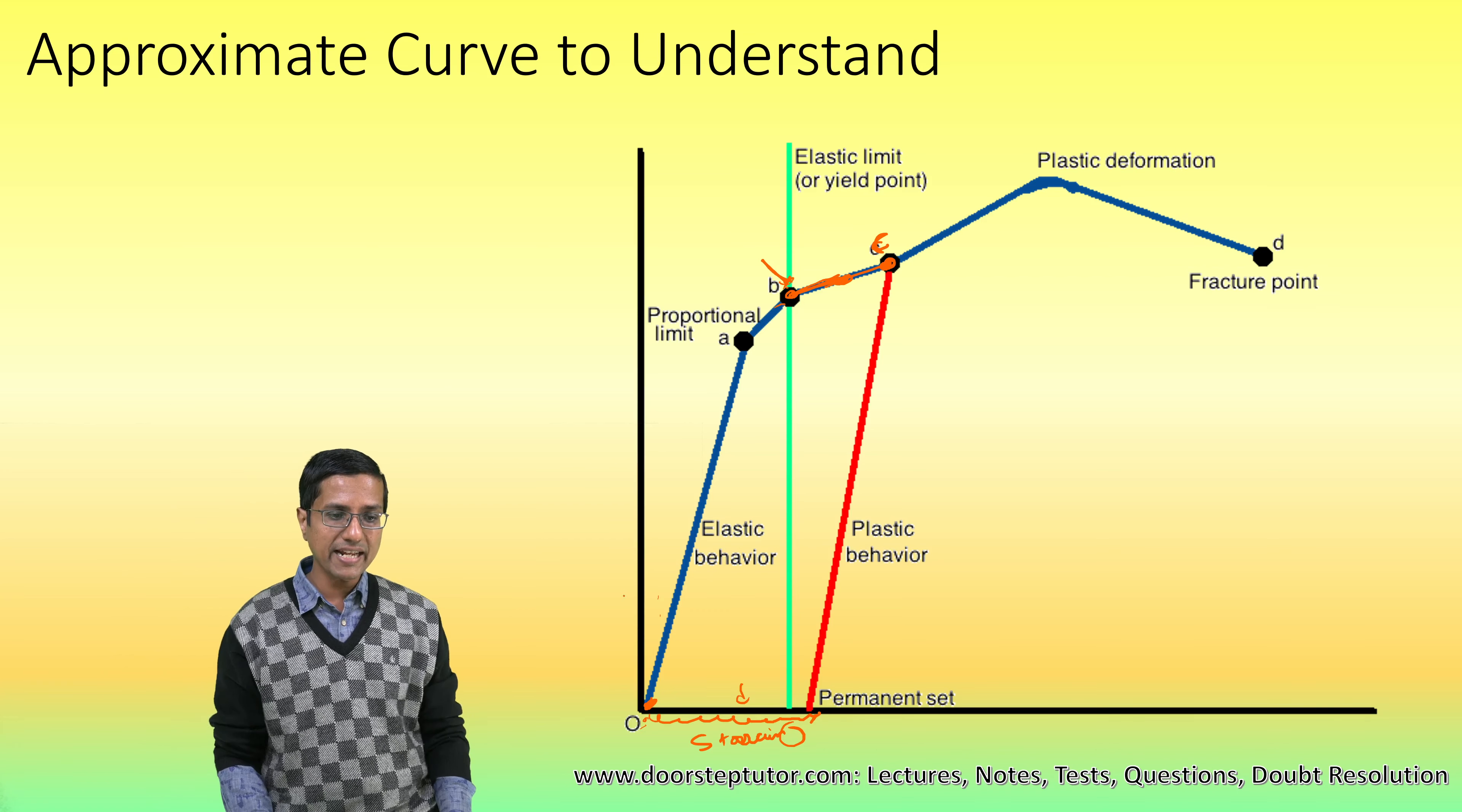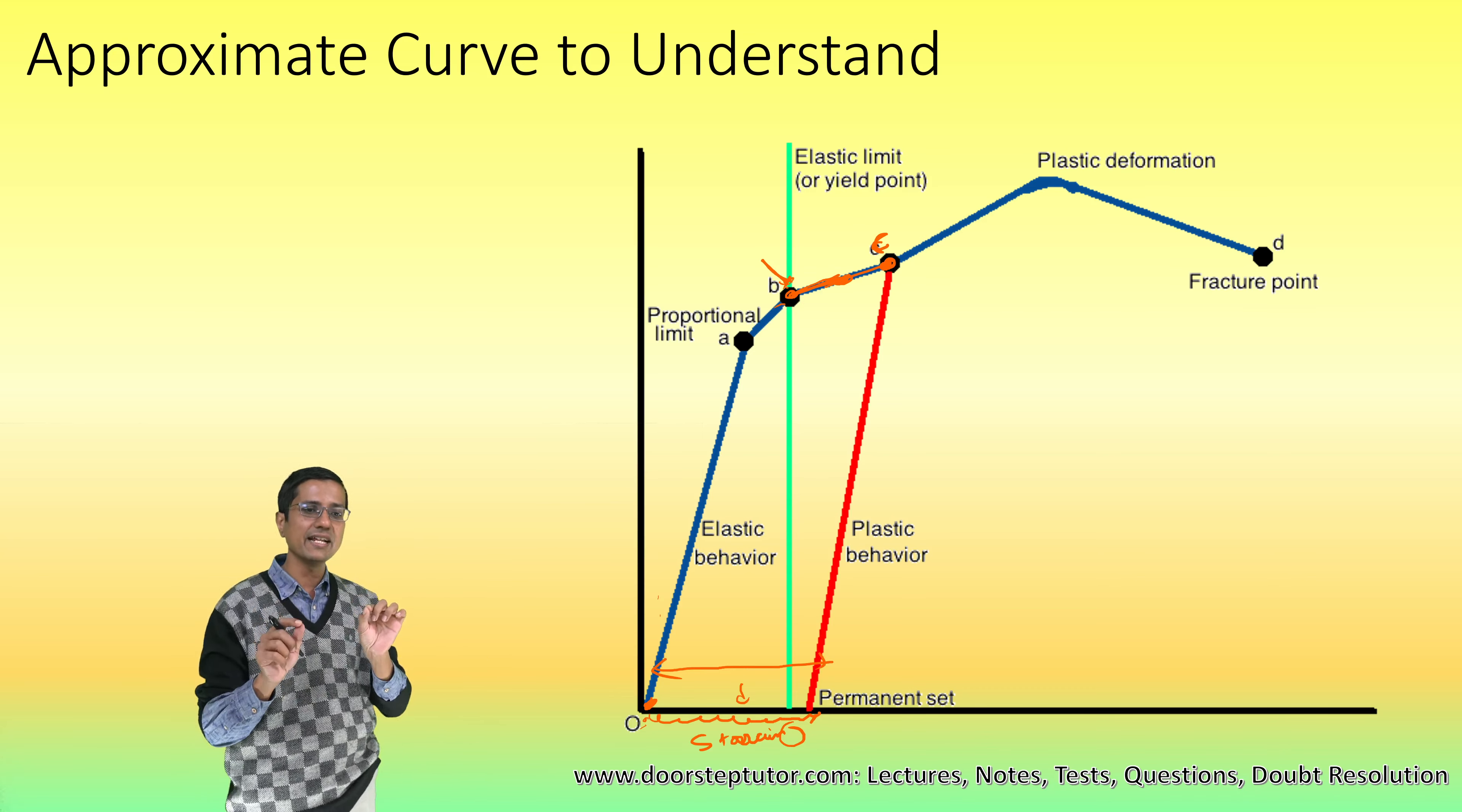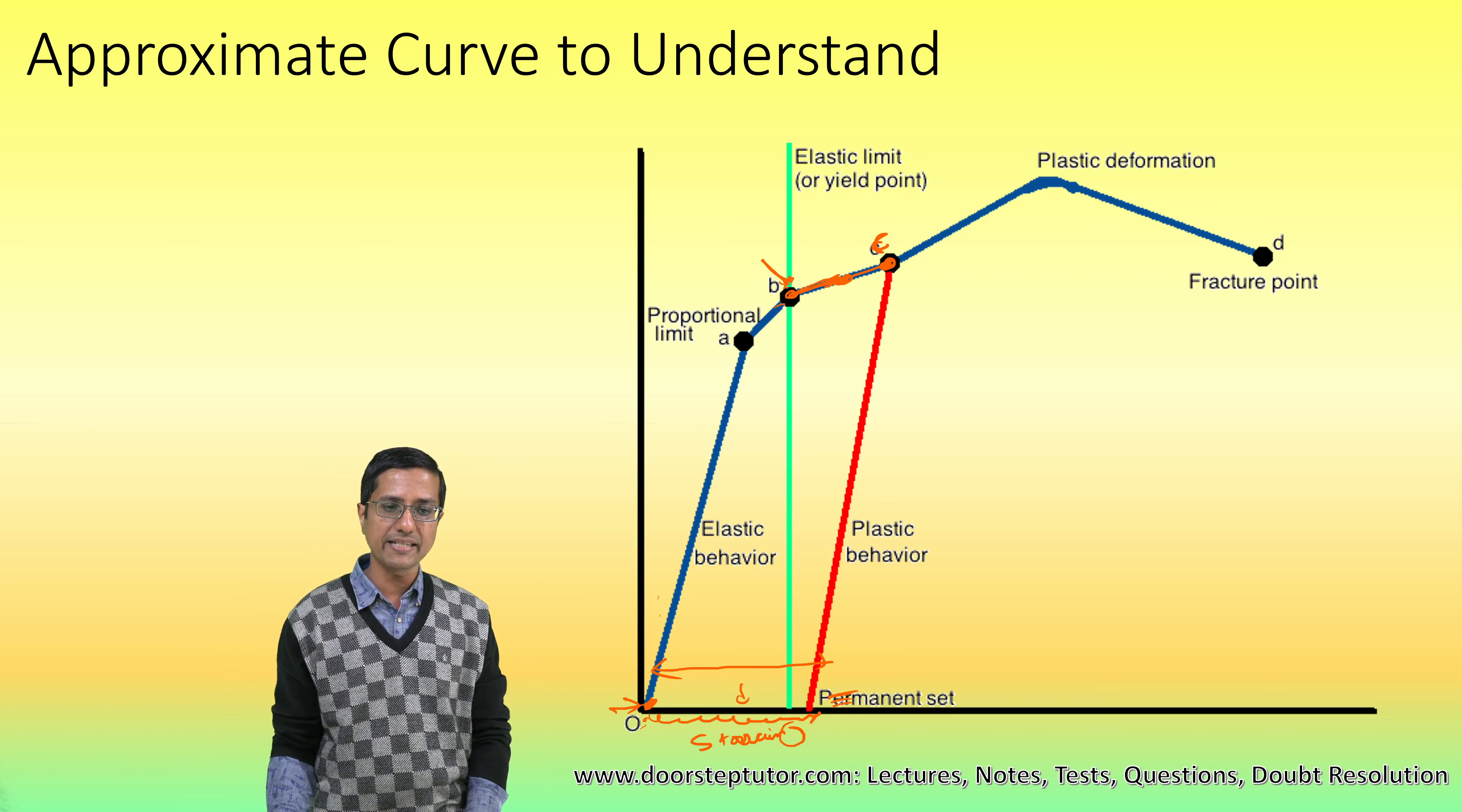And that energy is permanently stored inside the material as potential energy. I would not be able to get it back. That energy causes the strain in the material even at zero stress, and that is known as permanent set.